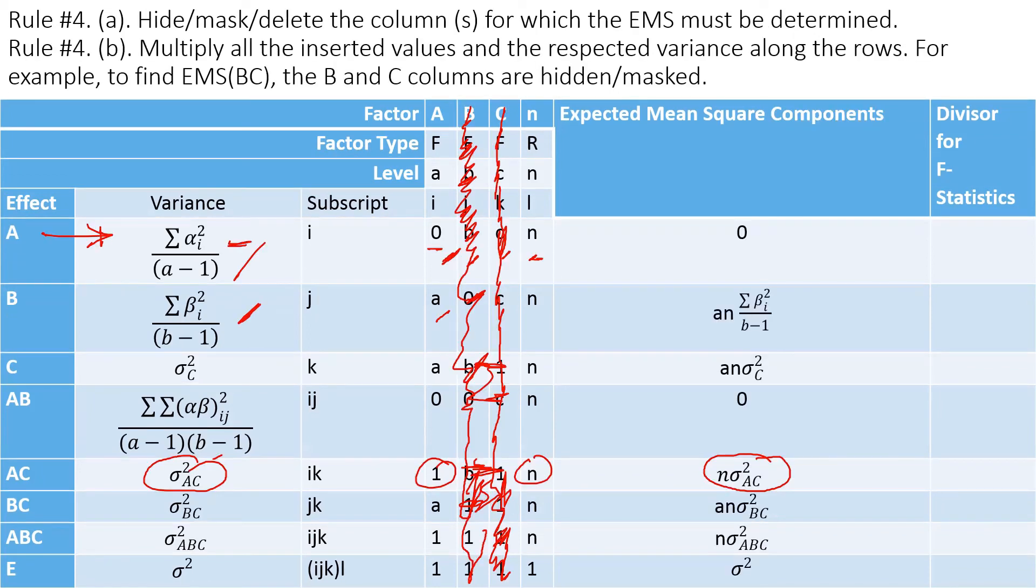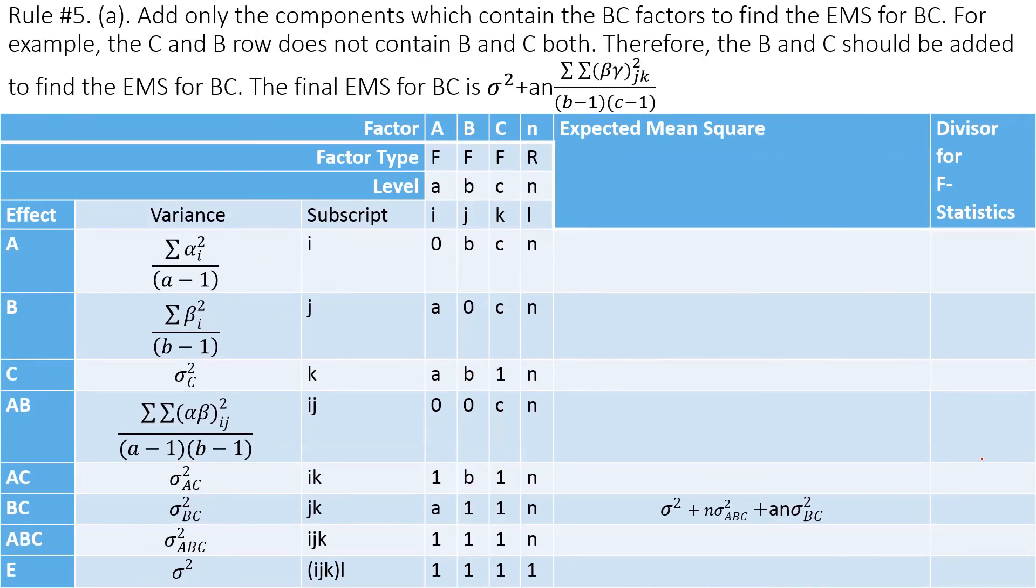So that's how this N sigma squared AC comes. And then to get the BC expected mean square, what you have to do is you're going to add, so to find the EMS, expected mean square for BC, you're going to add all of them that has both BC. So we got BC, so we got BC in there, BC in there, and BC in there. So first three is actually the expected mean square for BC.